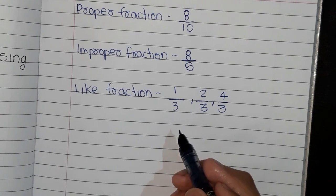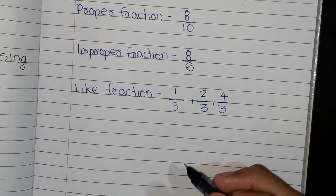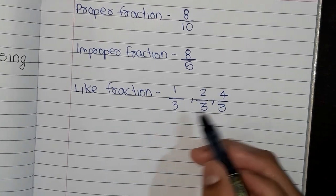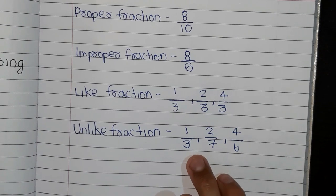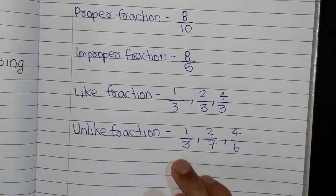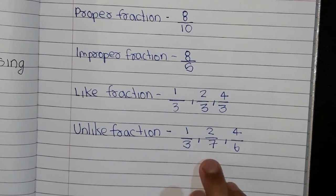Like fraction means that the denominator should be same, as you can see in this example. Here all the denominators are same. Unlike fraction have different denominators. As you can see in this example, the denominators are different.